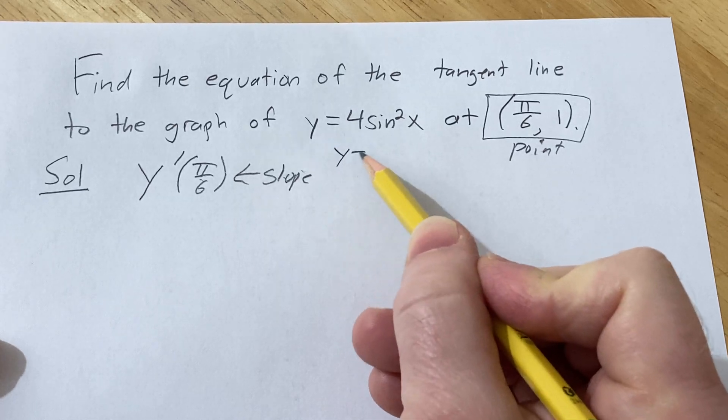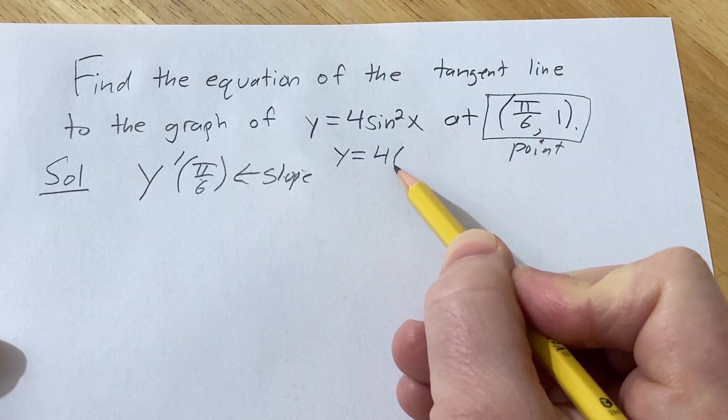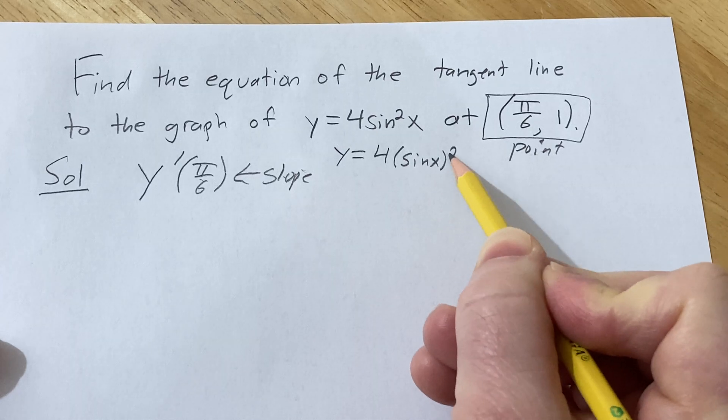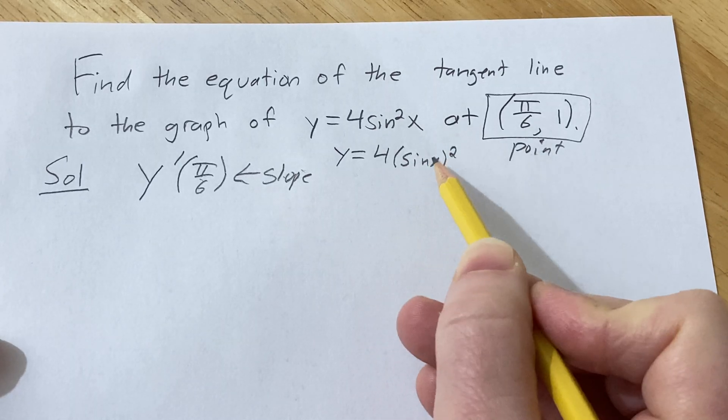We can think of y as 4 times (sin x) quantity squared. So when we differentiate here, we're going to use the chain rule.